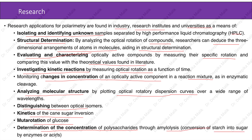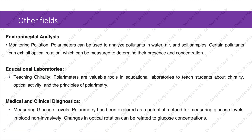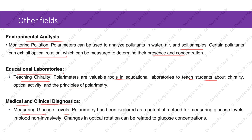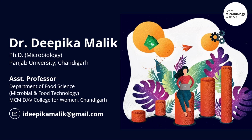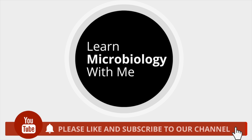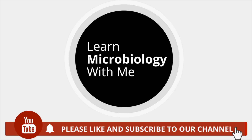Other fields include environmental analysis: polarimeters can analyze pollutants in water, air, and soil samples, as certain pollutants exhibit optical rotation that can be measured to determine their presence and concentration. In educational laboratories, polarimeters are valuable tools for teaching students about chirality, optical activity, and the principles of polarimetry. In medical and clinical diagnostics, polarimetry has been explored as a potential method for measuring glucose levels in blood non-invasively, as changes in optical rotation can be related to glucose concentrations. With this, we have completed the principle and applications of polarimetry.